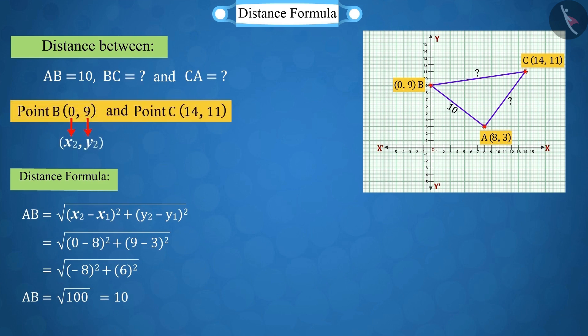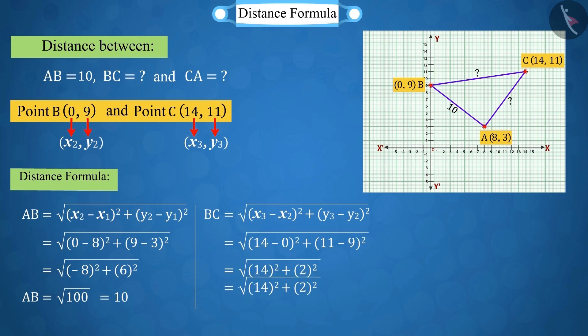Similarly, the coordinates of point C are x₃ equal to 14 and y₃ equal to 11. According to the distance formula, we get the measure of BC as 10 root 2.